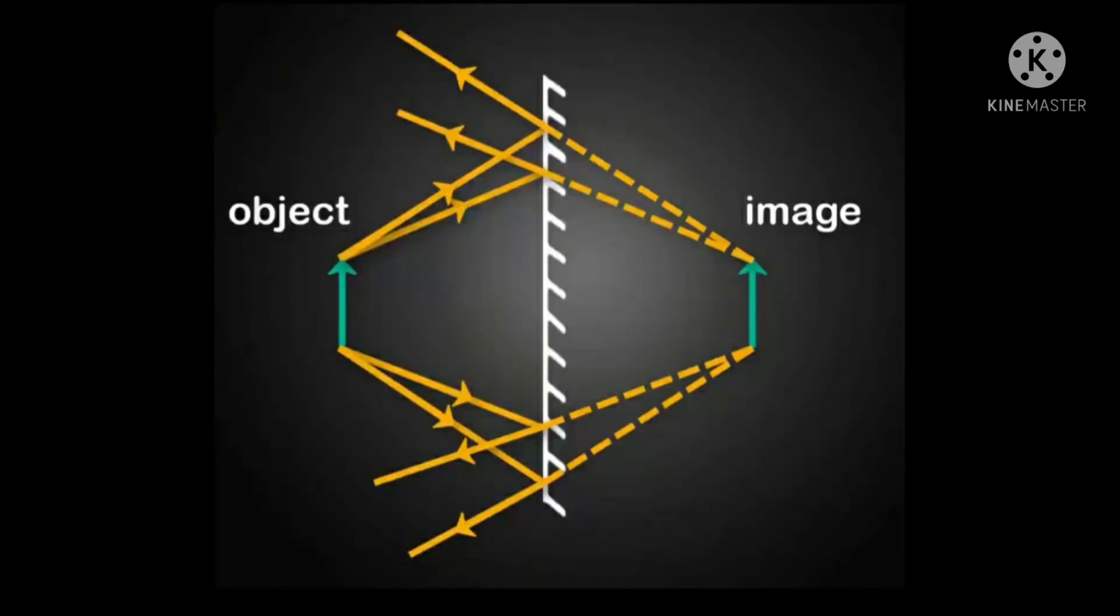Before we look at spherical mirrors, let's do a quick recap on how to draw the ray diagram for a plane mirror. As we discussed, we know all the properties of the image formed by a plane mirror. Image height equals object height and image distance equals object distance.